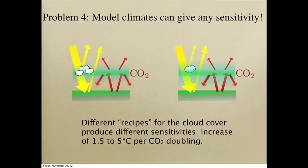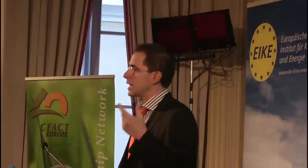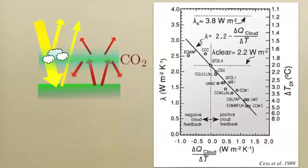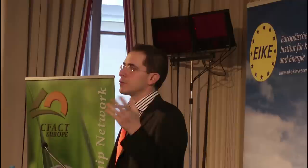You can see this in a paper published already in 1989. It shows the sensitivity of climate models across a range of models from back then. Because all models sit on a very close straight line when you plot sensitivity against the cloud cover feedback parameter, it tells you this sensitivity through cloud cover is the dominant source of uncertainty in climate models. The reason the IPCC cannot predict the temperature increase is that nobody knows the correct recipe for how much cloud cover will change when you heat the planet.